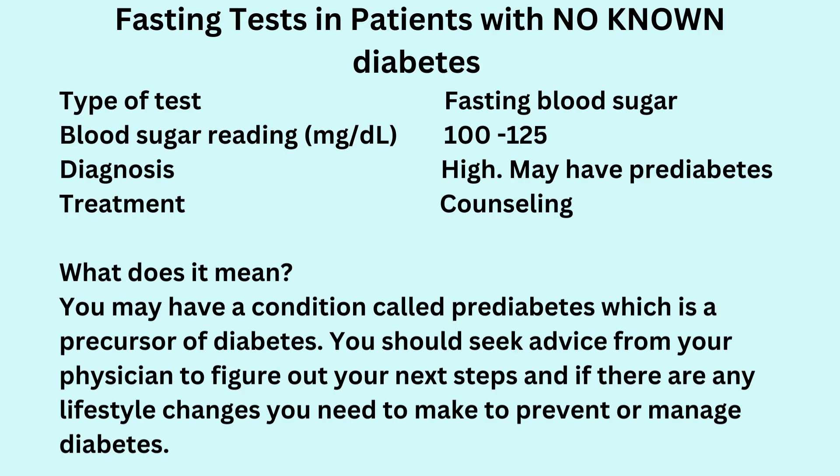If the blood test you had was a fasting blood sugar and you got a reading between 100 and 125 milligrams per deciliter, then your blood sugar level is considered high. You may have a condition called pre-diabetes, which is a precursor of diabetes. You should seek advice from your physician to figure out your next steps and any lifestyle changes you need to make to prevent or manage diabetes.